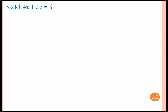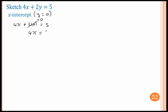Next one. Step one: find the x-intercept first. The x-intercept is when y is equal to zero. So when y = 0: 4x + 2(0) = 5, and two times zero is zero, so 4x = 5. Divide everything by 4, so x is equal to one and a quarter.